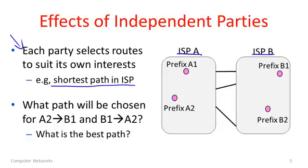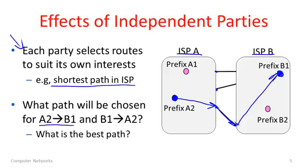Let's consider the path chosen for traffic going from A2 to B1. Starting inside ISP A, which controls how traffic goes through its network, we want to send it along the shortest path to reach prefix B1. We could go via any of the links connecting to ISP B. I'll choose the closest one, which is the shortest path. We go over that segment, land in ISP B, and take the most direct path to B1 — it's a little bit of a roundabout path.